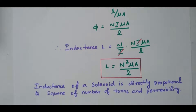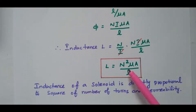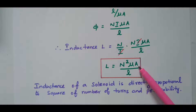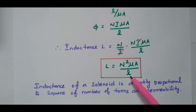From this expression, the inductance of a solenoid is directly proportional to the square of number of turns and permeability. It is also proportional to the area of the coil divided by the length of the coil, A by l.